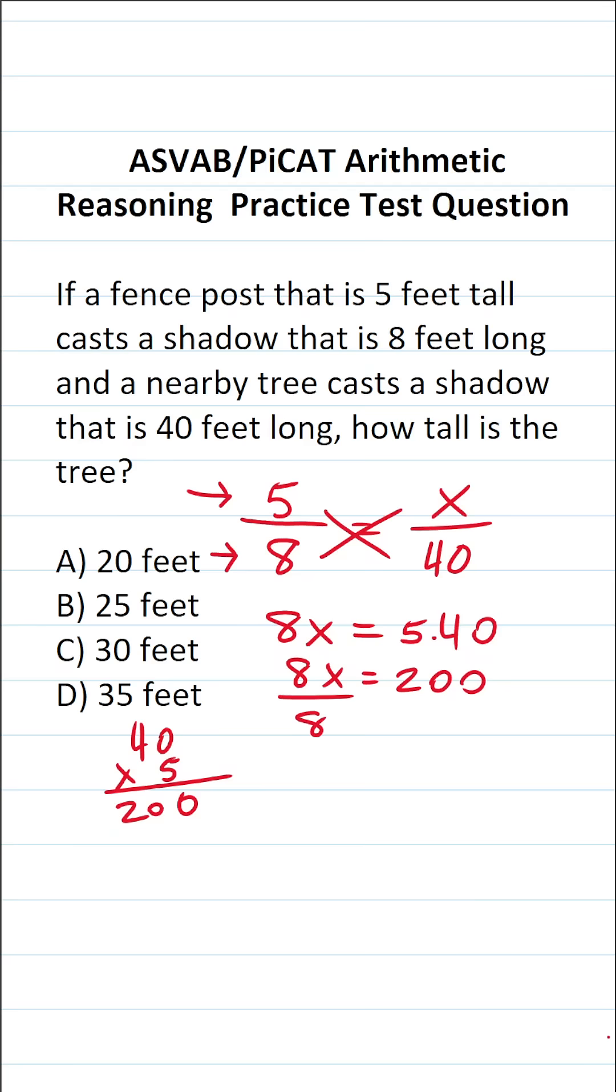And to get x by itself, we're finally going to divide everything by 8. This crosses out. This says x equals 200 divided by 8. Let's do the long division here.